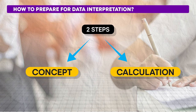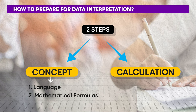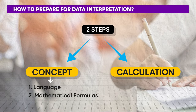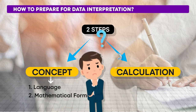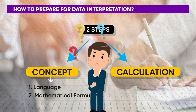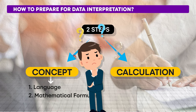Concept involves two things: one is the language of the question and the other is the major mathematical formulas. Suppose a question asks you to find out the percentage change in any production unit. From the language of the question, you should know that increase or decrease in percentage means you need to find out the growth rate to solve that question. Most of the time I see students don't understand the language of the question. They get confused by the language of the question, and understanding the language of the question is known as conceptual understanding.